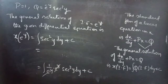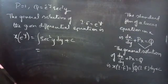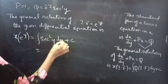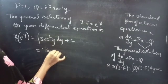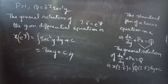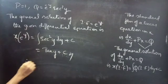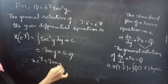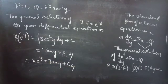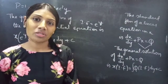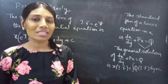Since we know that integral of secant square x dx is tan x, then integral of secant square y dy will be tan y plus c. Therefore, x into e power y equals to tan y plus c is the required solution. We have seen a problem from linear equation in x in this video. I hope you understand. We will see you in the next video.